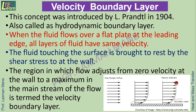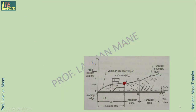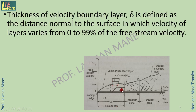This is called the boundary layer, and the variation is called the velocity gradient or velocity profile. The thickness of the velocity boundary layer is shown by the Greek symbol delta, defined as the distance normal to the surface over which velocity varies from 0 to 99 percent of the free stream velocity — that is, 0.99 times the free stream velocity.